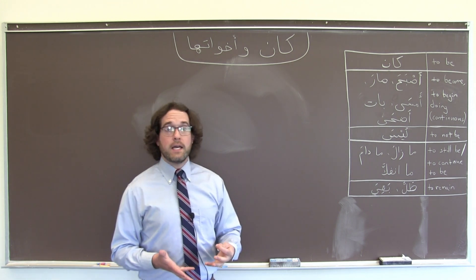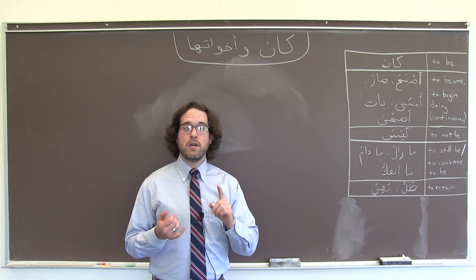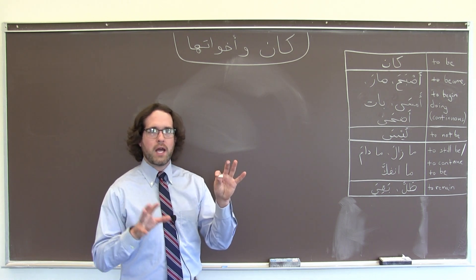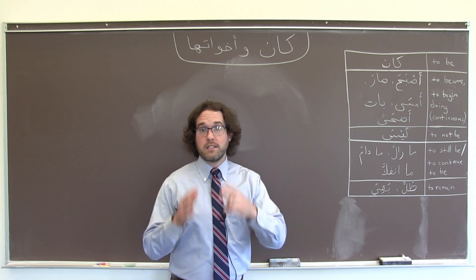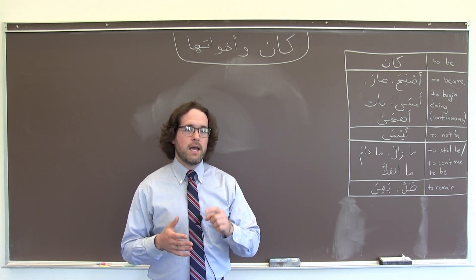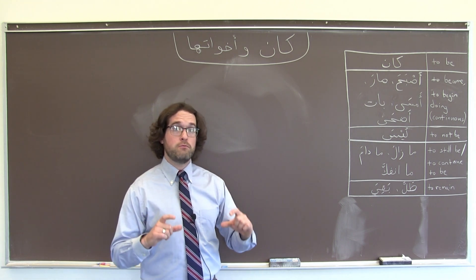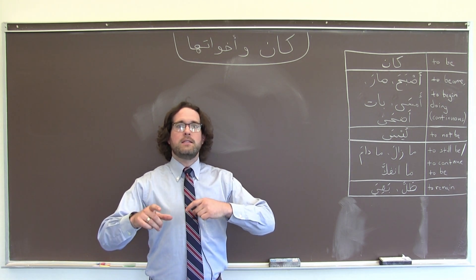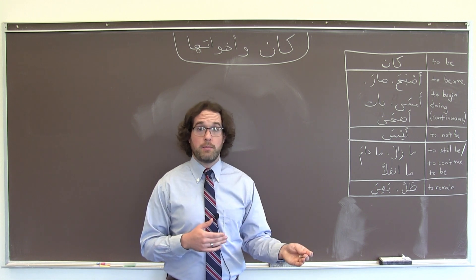They function essentially like other verbs, but in Arabic there are a couple of major differences. One, we use a special set of terms to describe the grammar around them in the sentence. Two, their direct objects, if they have direct objects, take a special case ending. And three, they can be used with مضارع مرفوع, a conjugated present tense verb, to convey the timing of a state or an action with another helping verb.